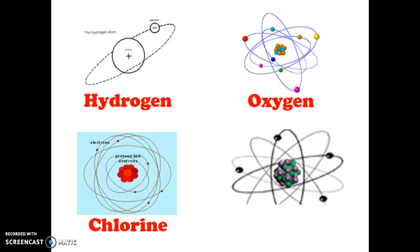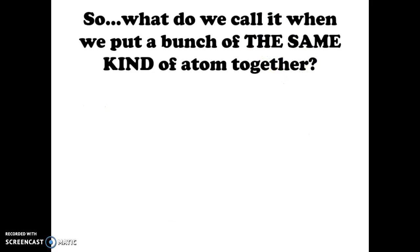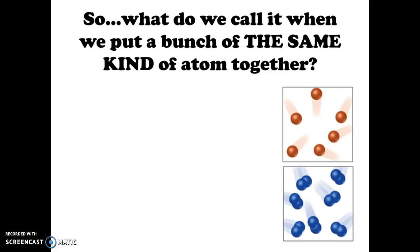So what do you call it then when we put a bunch of the same kind of atoms together? So we either have them together in maybe a container looking like that or maybe we have bonded together, what do we call that? Okay, so the key here is the same kind of atom. We would call that an element.